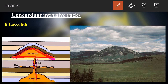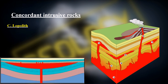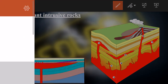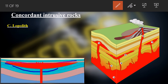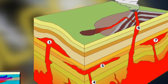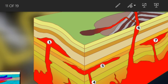Opposite to the laccolith, we have the lopolith, which has a flat top but a concave base. If you zoom into the figure you can see the lopolith labelled there — it has that distinctive concave-base shape.